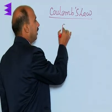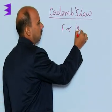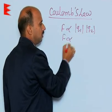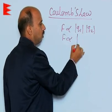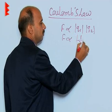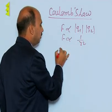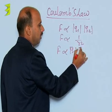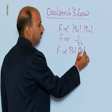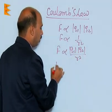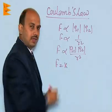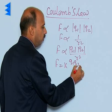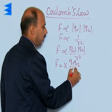F is proportional to the product of the magnitude of the charges and proportional to 1 upon R square. Combining these two, we can write F is proportional to Q1Q2 divided by R square, or F is equal to K times Q1Q2 upon R square, where K is the proportionality constant.